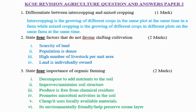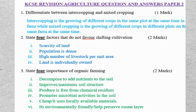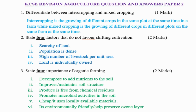Question number 2: State 4 factors that do not favor shifting cultivation. Number 1: scarcity of land. Number 2: when population is dense. Number 3: high number of livestock per unit area. Number 4: when land is individually owned.